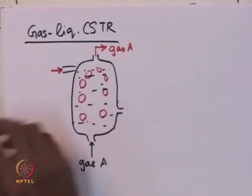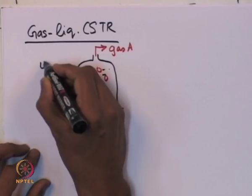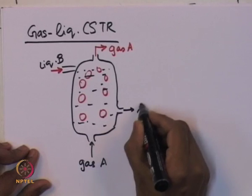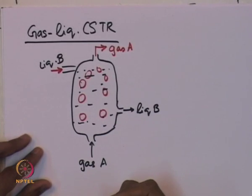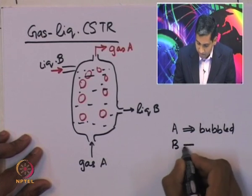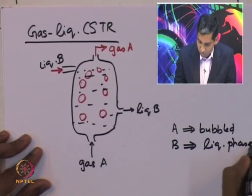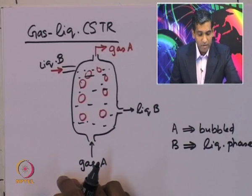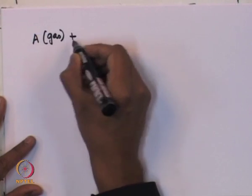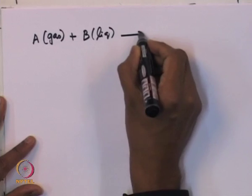There is also a liquid B flowing through the reactor while the gas is simultaneously bubbled through it; the liquid leaves from the exit stream. So species A is in the gas phase being bubbled, and species B is the liquid phase flowing through the reactor. The reaction occurs between species A in the gas phase and species B in the liquid phase, leading to the formation of certain products.